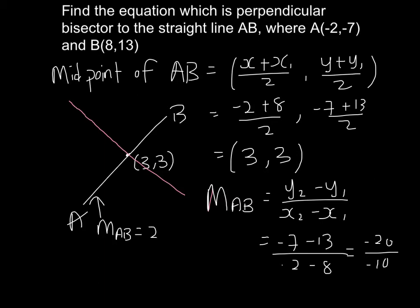Now we can find the gradient of the red color perpendicular line by using M1 multiplied by M2 equal to negative 1. I hope you are familiar with that equation. Let me go to the next page.